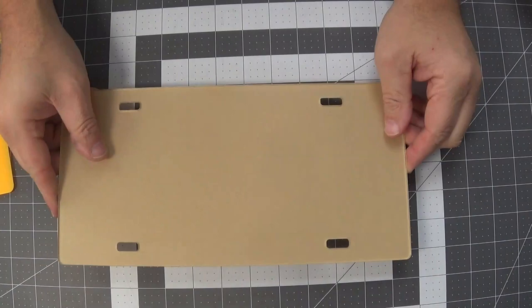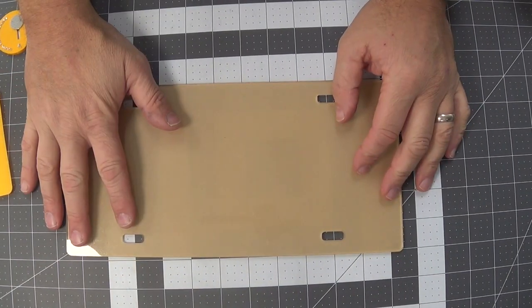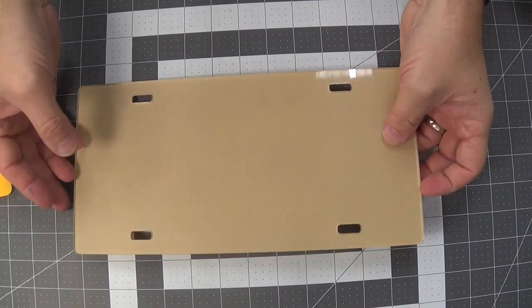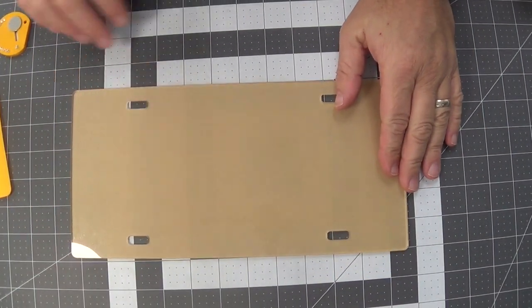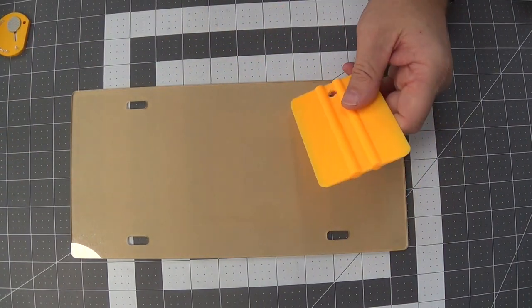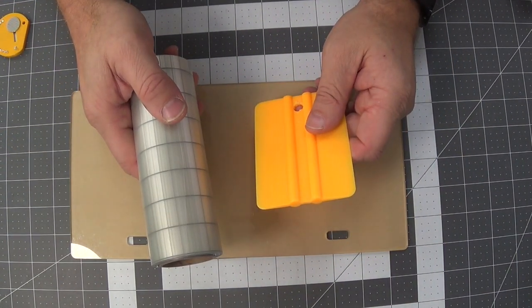All right, we're going to do the flat object first. This is just an acrylic license plate cutout that I've had for quite some time. Just going to use this for demo purposes. Still has the paper on one side. I've already peeled it off the front, and as I said, a couple things you're going to want to have for this is a good squeegee and good quality transfer tape.